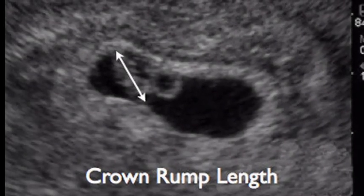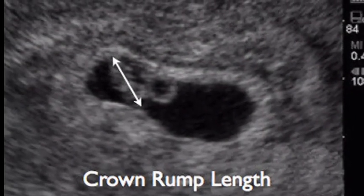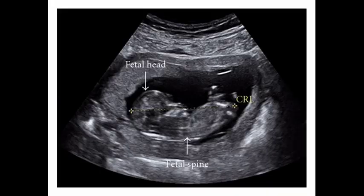Crown rump length is the measurement used to determine the length of human embryos and fetuses. The accuracy of the crown rump length in dating the pregnancy depends on good correlation between the measurement and fetal age, in a period when growth is rapid and minimally influenced by fetal pathology. The crown rump length is the longest length of the embryo or fetus measurable, excluding the limbs and yolk sac.